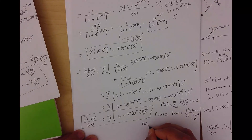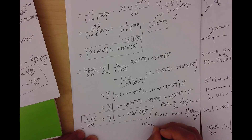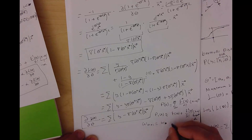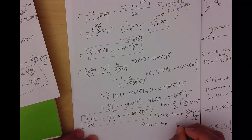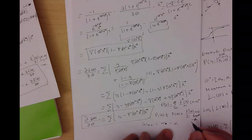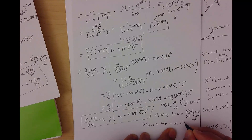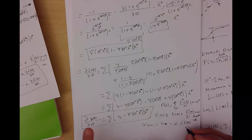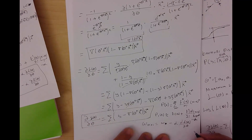So every w update comes from the previous w minus the learning rate multiplied by the derivative of the Jacobian cost function, which is the expression we derived here.